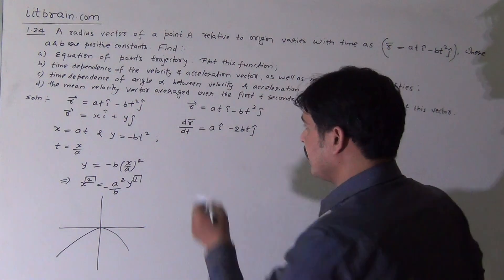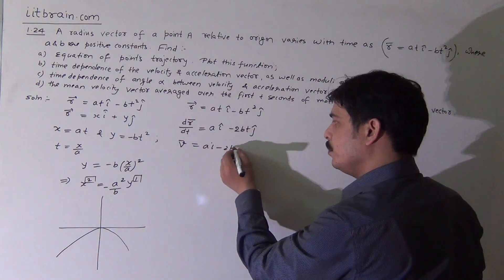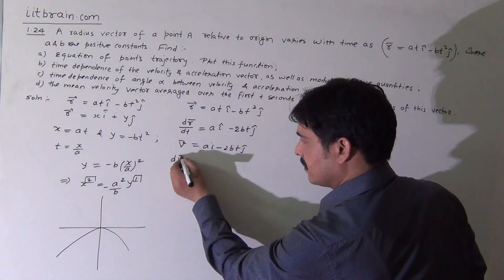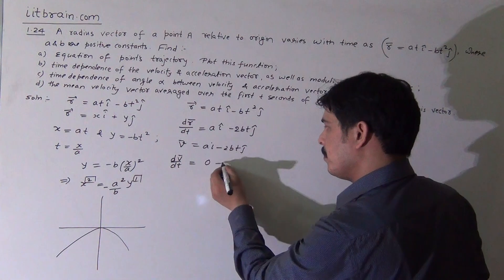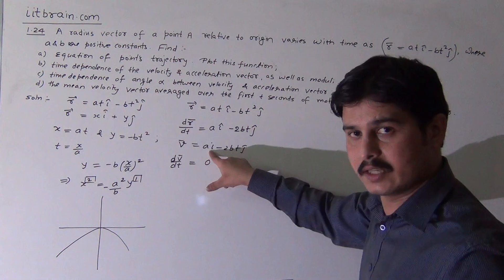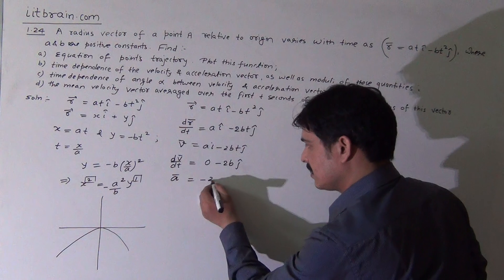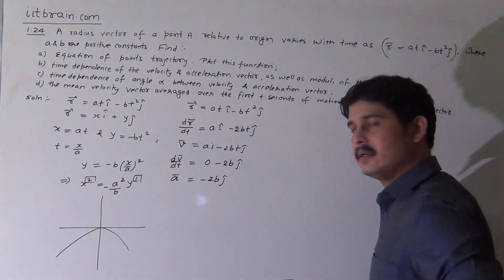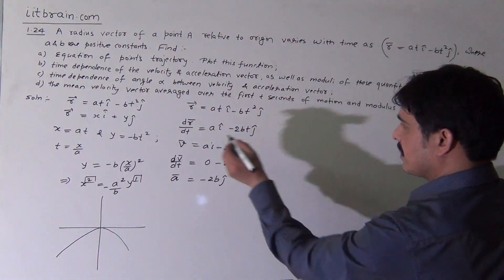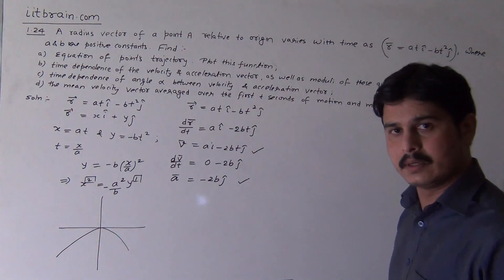So the velocity vector equals a·î - 2bt·ĵ. Differentiating this again gives dv/dt = 0·î - 2b·ĵ, since the first part a·î is free from t, its derivative is zero. Therefore the acceleration vector is -2b·ĵ. These are the time dependences of velocity and acceleration; this is an example of uniformly accelerated motion.